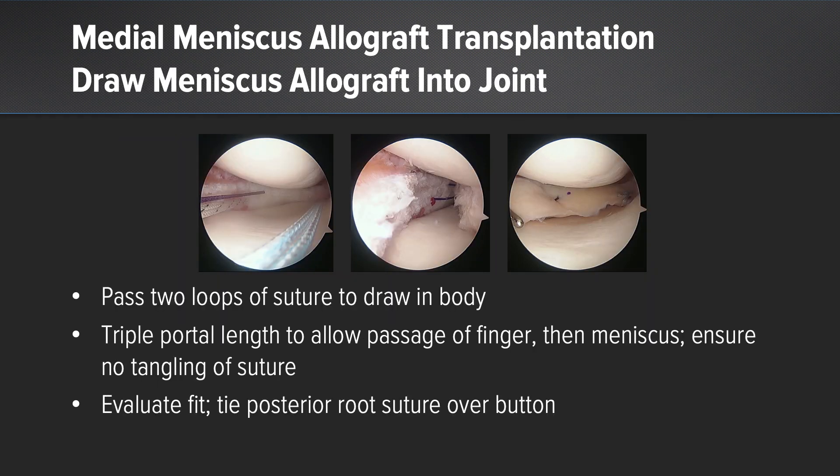Then I have to draw the meniscus allograft into the joint. First, I pass two loops of suture about the body, and that's depicted on the left with the purple and the tiger-striped white suture.